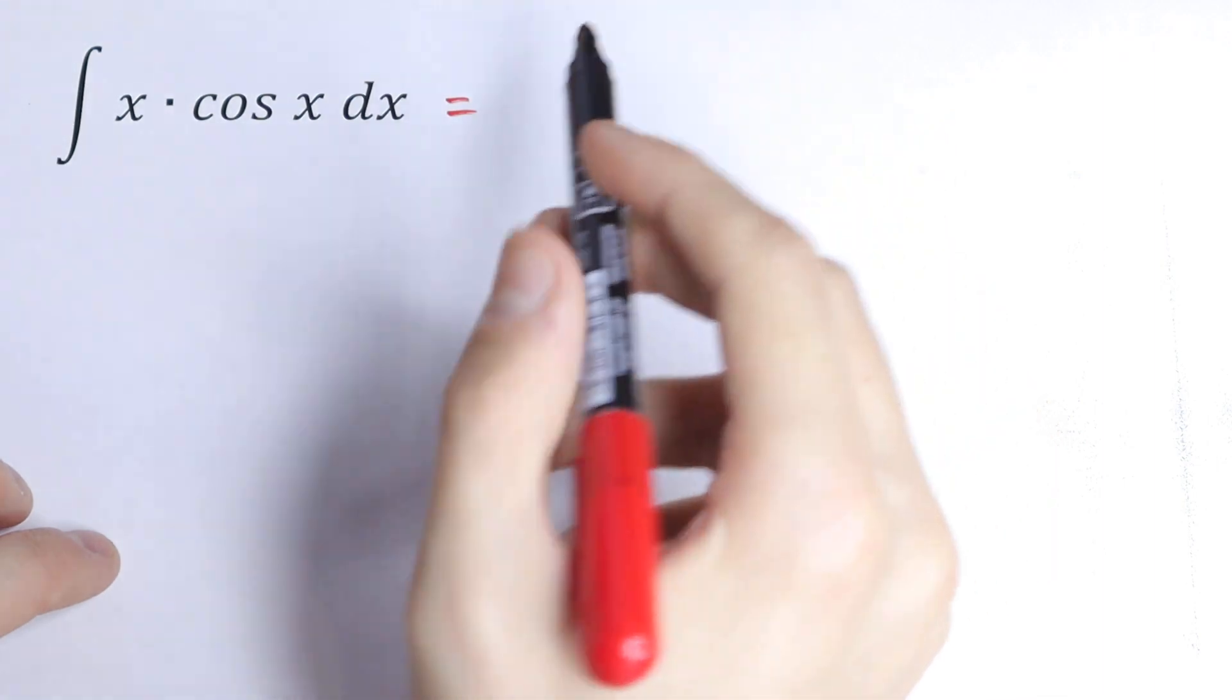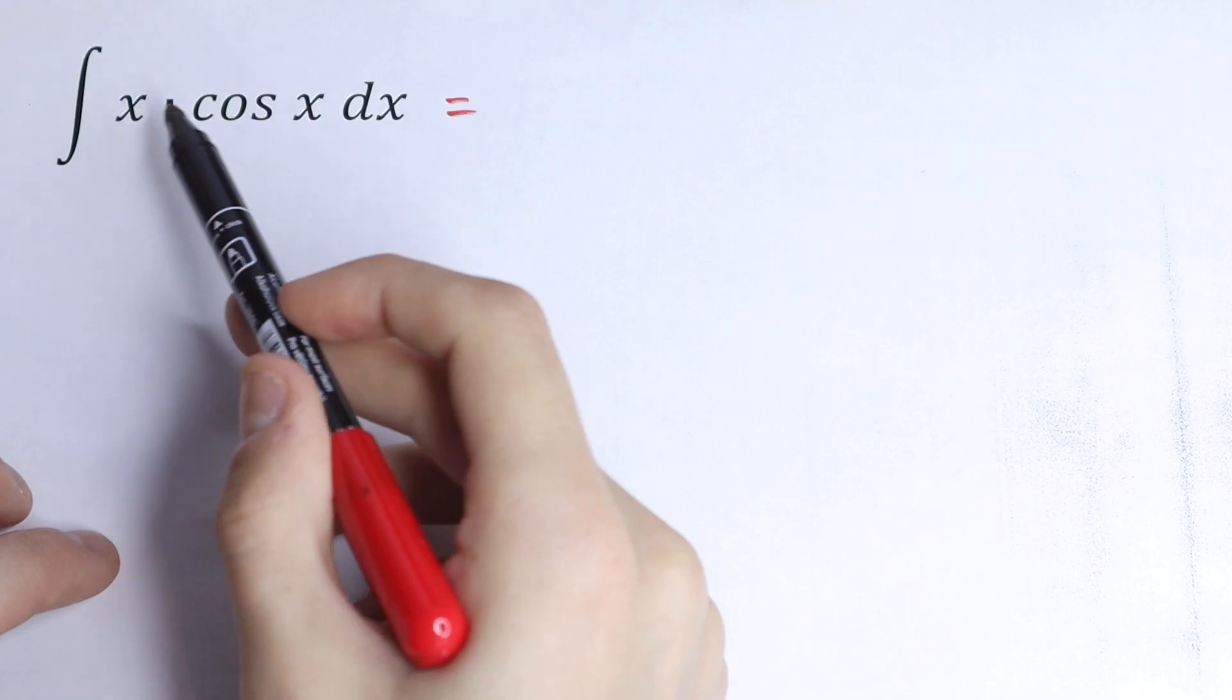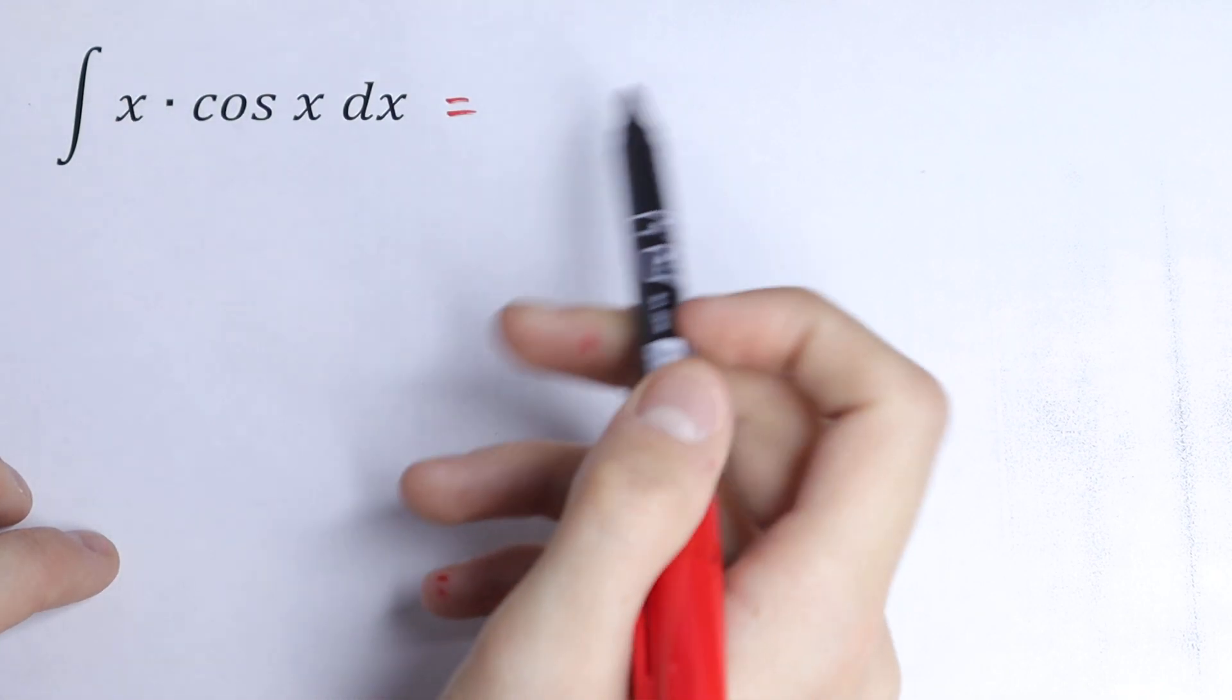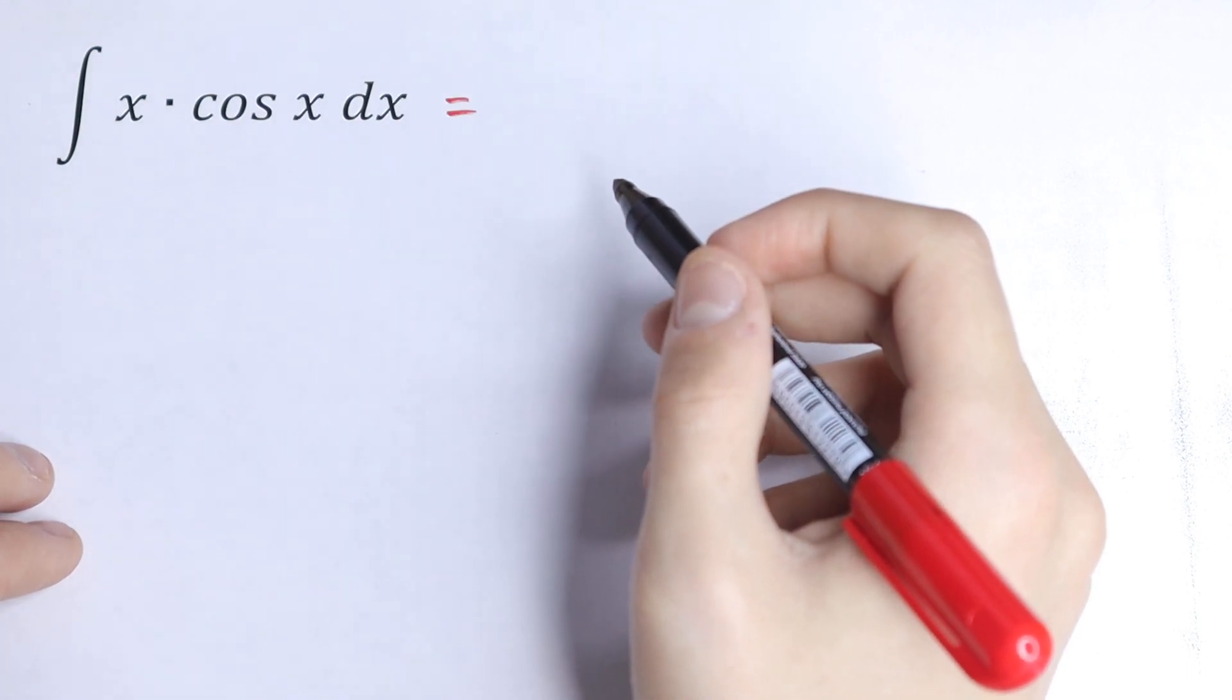I want to suggest a little trick right here because at first sight this integral is really hard. This is not a table case - we have a product x times cosine x. Of course we don't know what this integral will be, but how can you solve this?